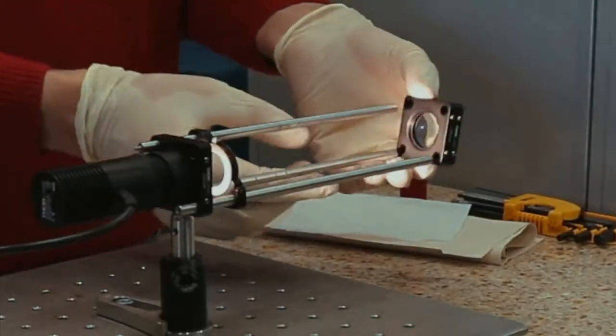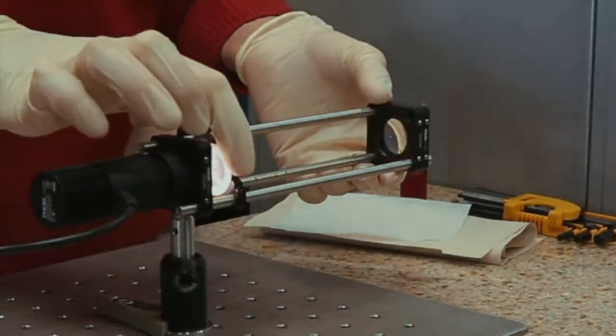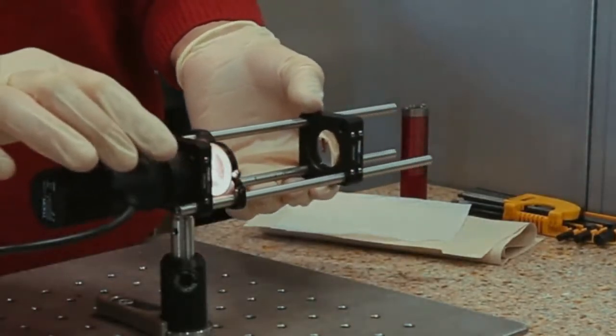Insert the cage plate in the cage rods. Make sure that the rounded face of the lens looks away from the LED light source.